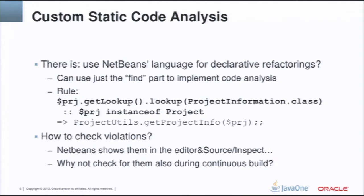For the example from the previous slide, we could have a rule like the one shown here, which actually fixes the problem. But if we use just the highlighted part, it will find the places in the code that use the incorrect pattern and report that code.